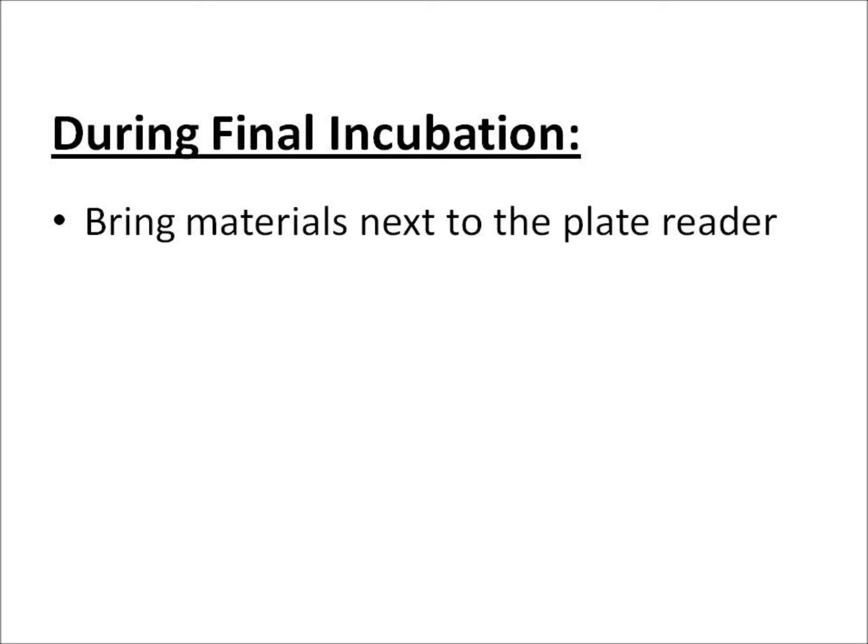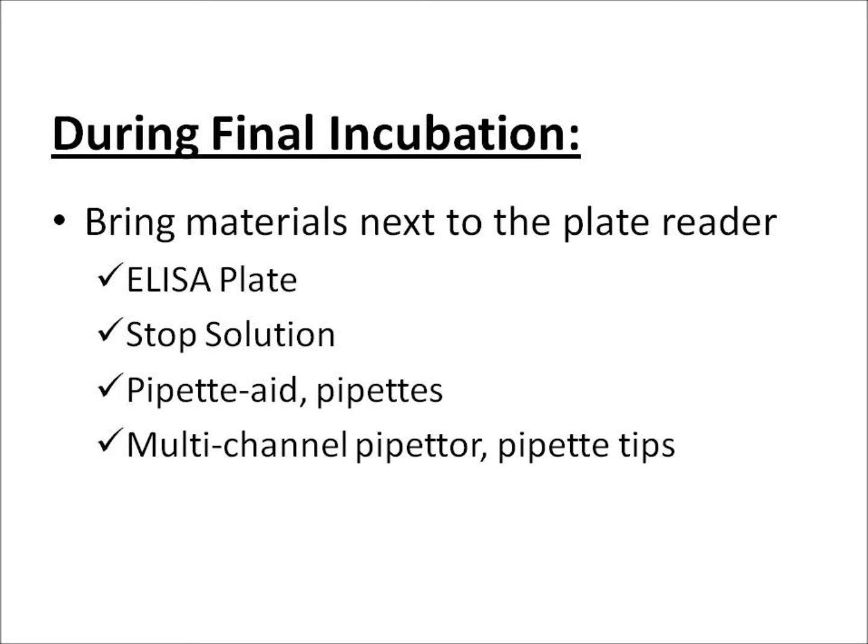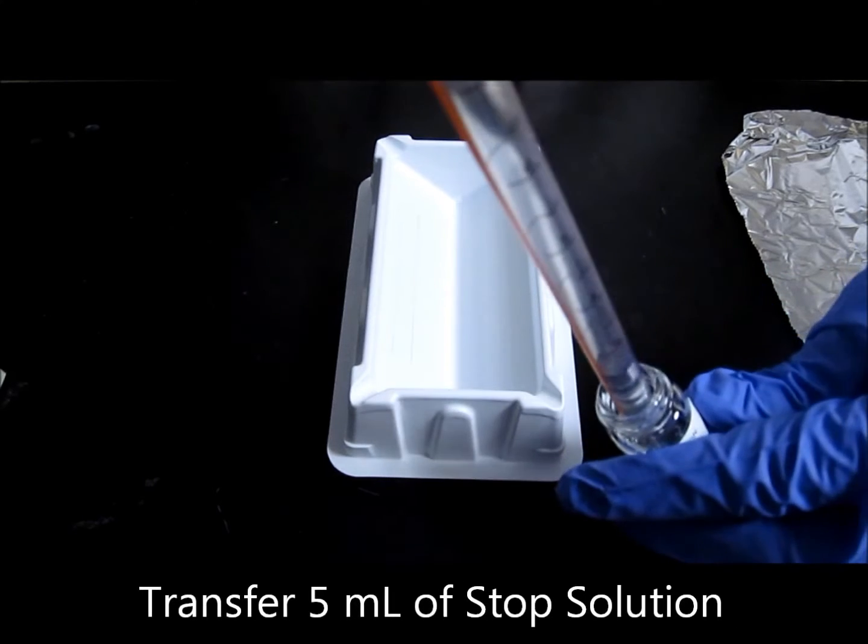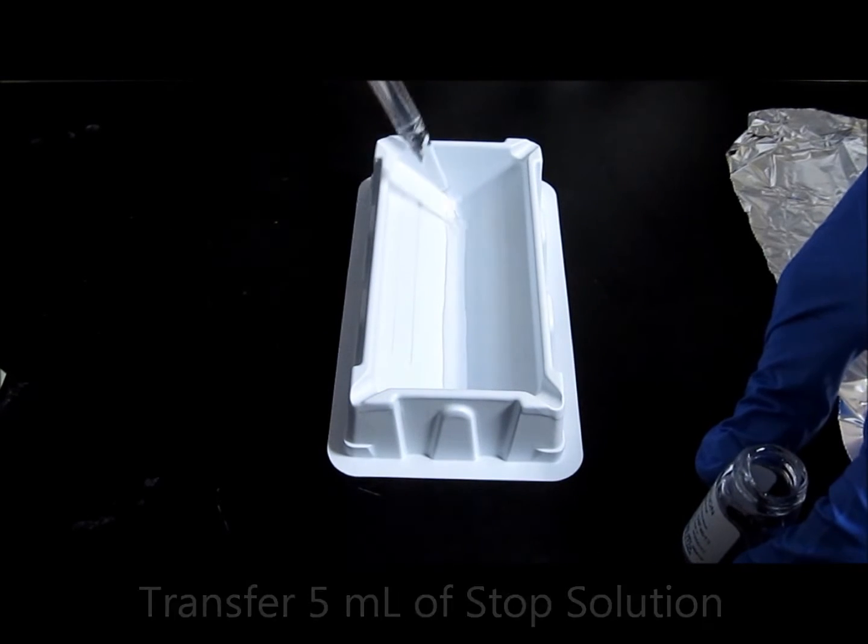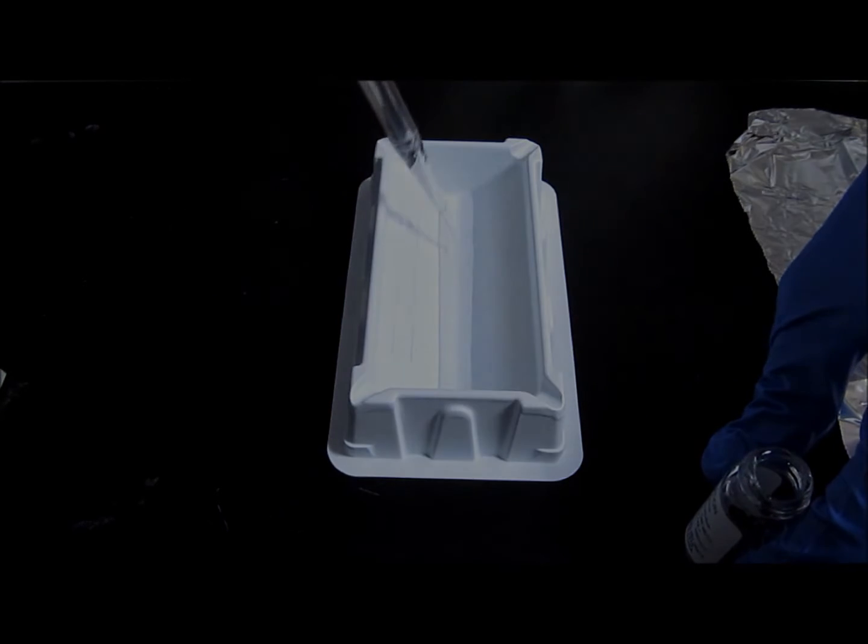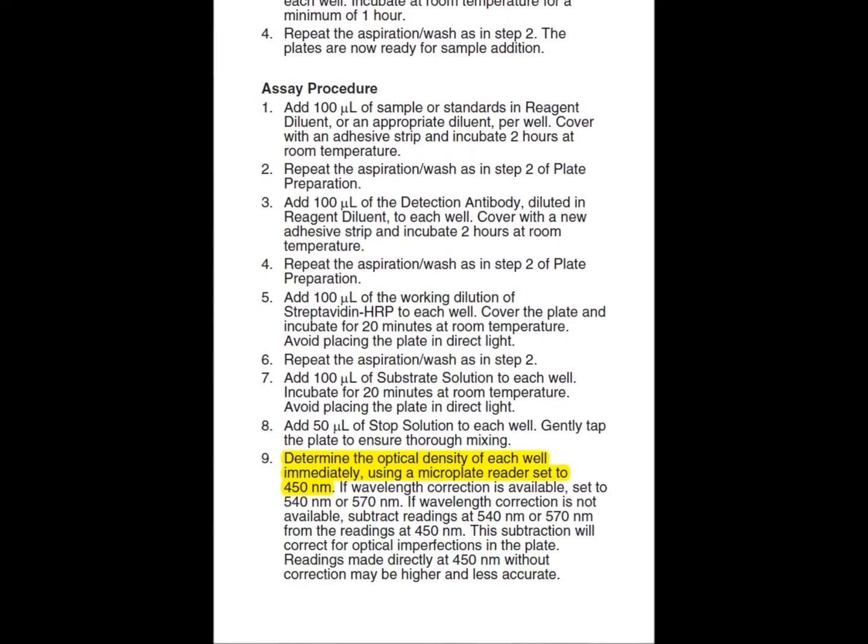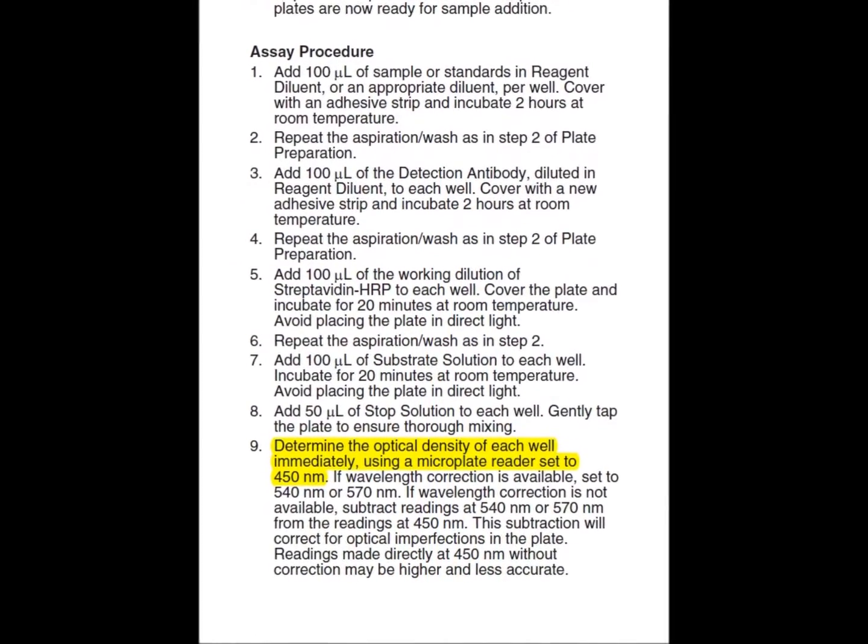During the incubation period, bring the ELISA plate next to the plate reader along with the stop solution and pipetting equipment. Be careful when handling the stop solution because it is a very strong acid. Transfer 5 milliliters of stop solution to the reservoir and set your multi-channel pipetter to 50 microliters. Program the plate reader to read absorbance at the wavelength indicated by the manufacturer. That would be 450 nanometers for this kit.